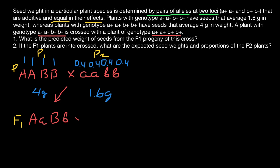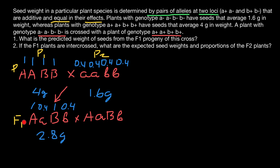We are told to cross plants from the F1 generation. Let's first answer question one: what is the predicted weight of seeds from the F1 progeny? The dominant allele adds 1 gram and the recessive allele adds 0.4 grams. So for genotype AaBb: 1 + 0.4 + 1 + 0.4 = 2.8 grams. As expected, the F1 genotype and phenotype are intermediate between the two parents, which is classic for additive inheritance.